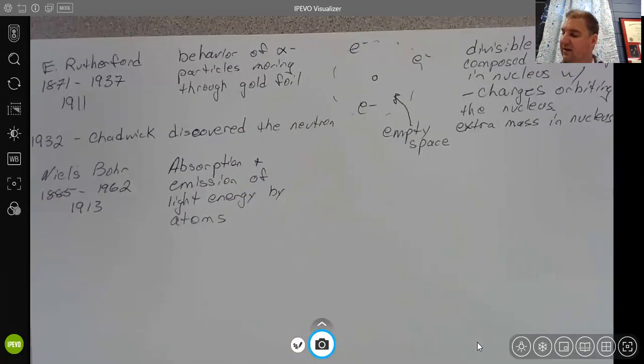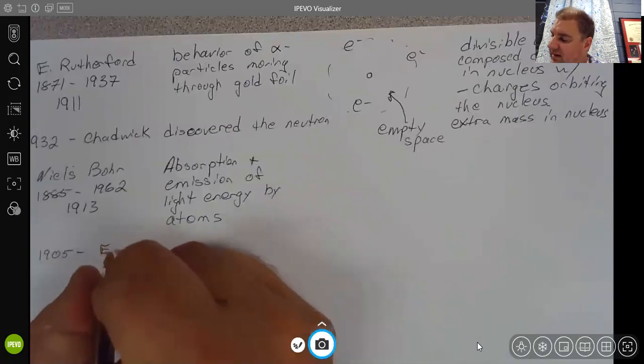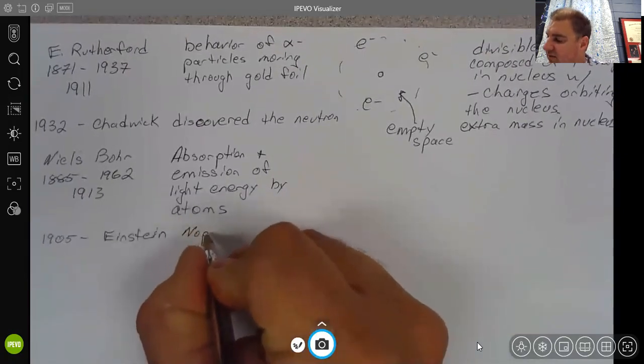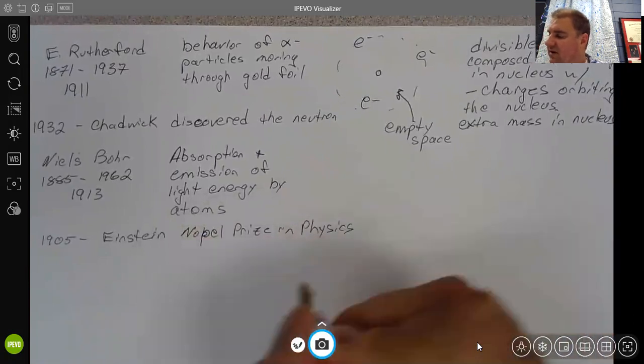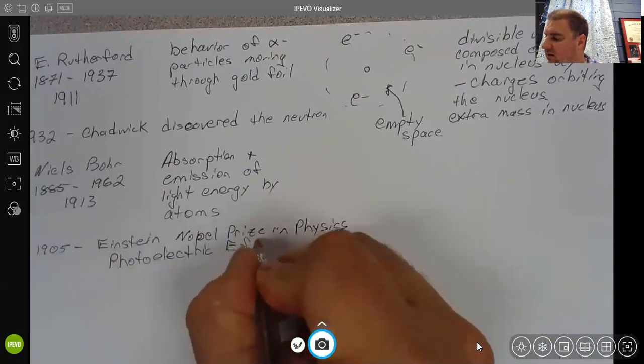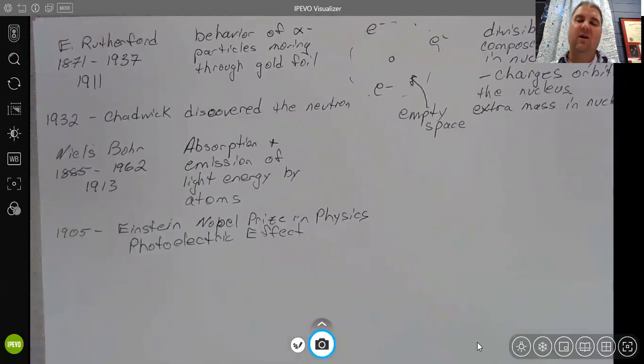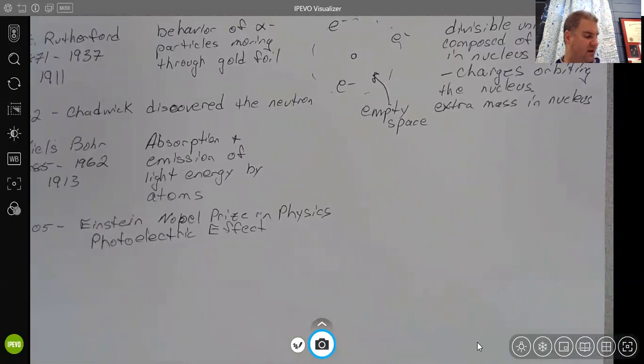This is also after, I should say 1905 was when Einstein received the Nobel Prize in Physics for explaining the photoelectric effect. So it was known that light on its own could cause electrons to be ejected from matter or electrons to be ejected from atoms. And so Bohr had an understanding that this light was both exciting electrons and could be given off by electrons in the atom.